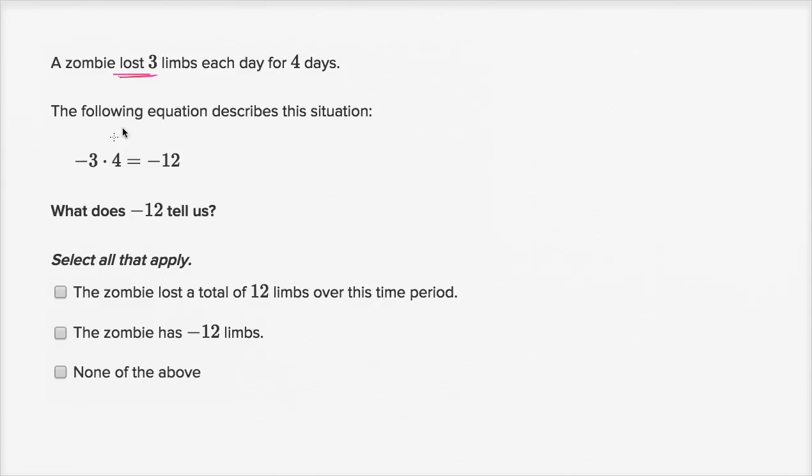So the zombie lost three limbs each day. So lost three limbs. So negative three could represent, hey, I'm losing three limbs. The negative is, my number of limbs is going down by three. So this is negative three. And it's doing that for four days. For four days. And we have negative 12, which is the total number of limbs that our zombie loses.